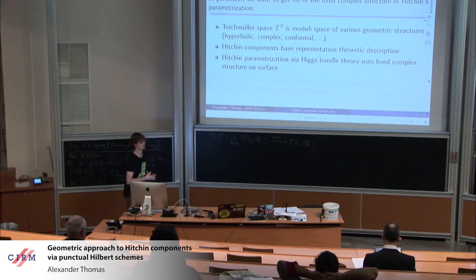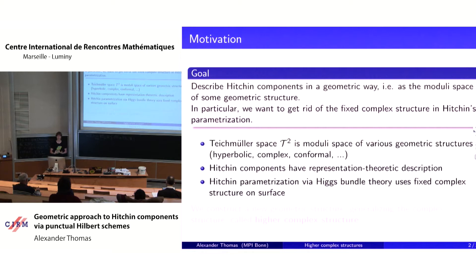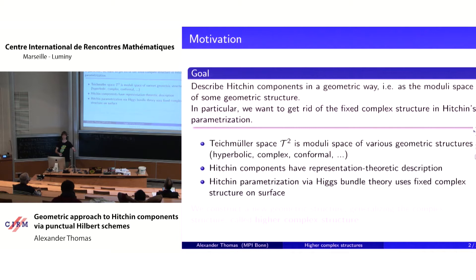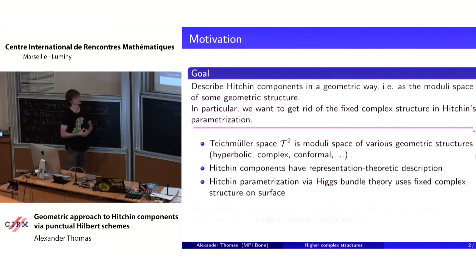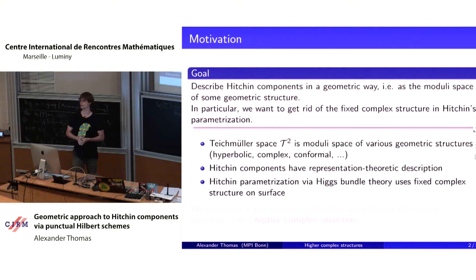In his paper of 1992, Hitchin described his component with analytic methods using the theory of Higgs bundles. In particular, he parametrizes one component by fixing a complex structure and then parametrizes it by holomorphic differentials. The quite natural question he already posed at the time was: is there a geometric definition of these Hitchin components?